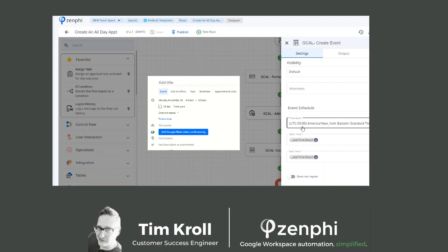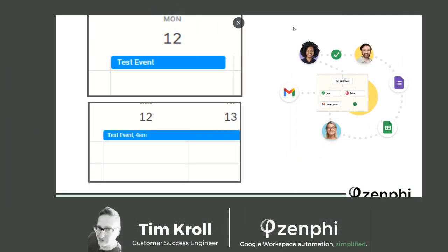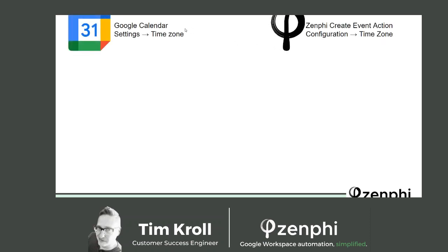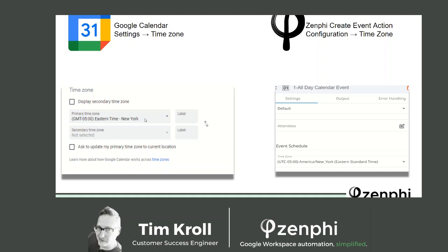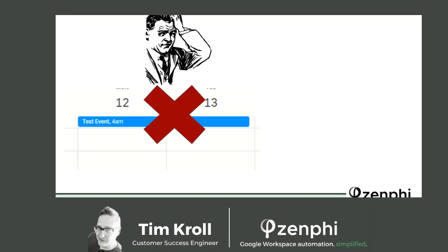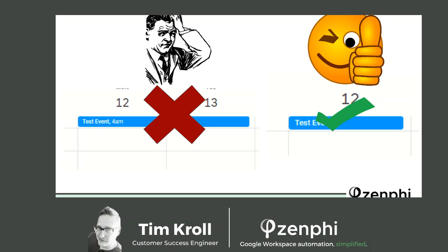This next part is really important, so I want to pause here for a quick second. On the time zone, it's very important that your time zone in your Google Calendar settings and in the Zenfee event action configuration need to match. If they don't match, you're going to end up with some weird calendar appointments — it will appear on the calendar wherever the mismatched time zone places it. When you match them up, you're going to get the correct format for your calendar event.